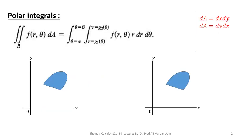Next, this is the general representation of a polar integral: double integral over the general region R of f(R, theta) dA, where R is the region of integration, f(R, theta) is a function of two variables R and theta, and dA is a small patch of that particular region.